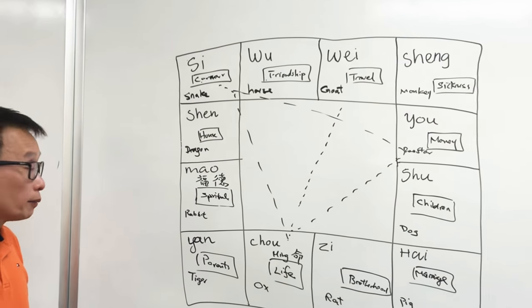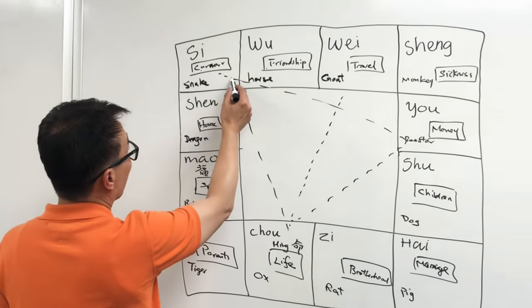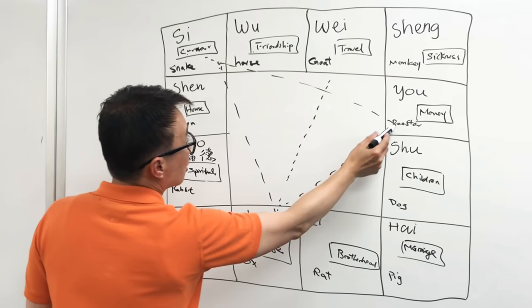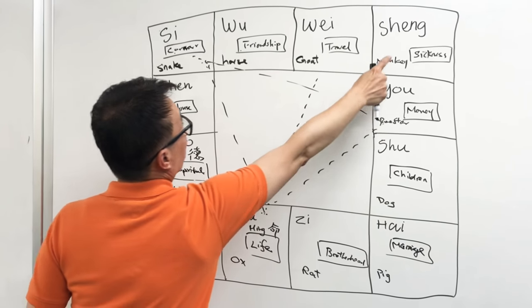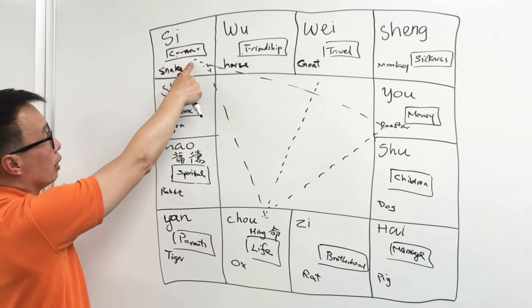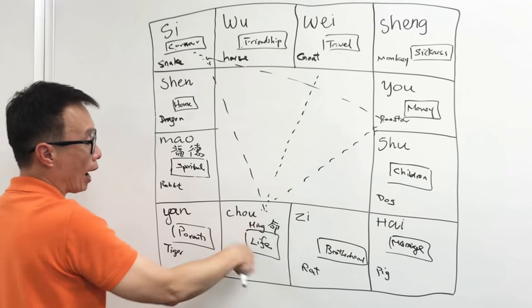And then you see I'm drawing a triangle, an equal distance triangle. So one, two, three, four. And then one, two, three, four. And then one, two, three, four, going back to the Ming. So this triangle affects each other.